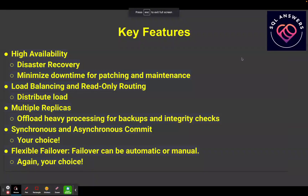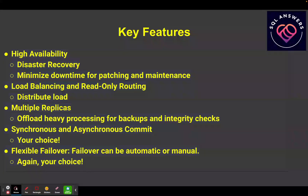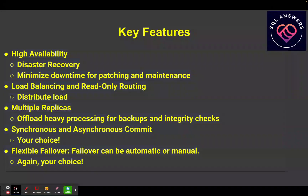Before we dig in, let's go over some of the key features and functions of Always On Availability Groups. Their primary responsibility is high availability and disaster recovery. You can also use them for minimizing downtime during patching and maintenance — you can patch your replica servers while serving traffic to your primary, then failover to those upgraded servers, upgrade your primary replica, and then fail back.